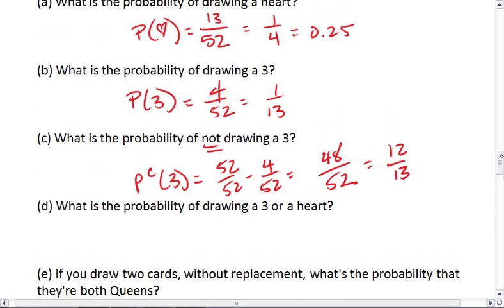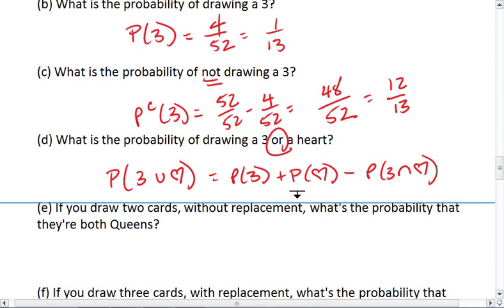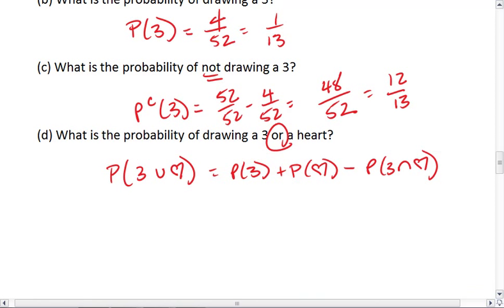The probability of drawing a 3 or a heart. Well, we know that the probability of a 3 or a heart is going to be the probability of a 3 plus the probability of a heart minus the probability of a 3 and a heart. What this means, and I'll add the numbers in a moment, but I want to make sure you understand the concept of this.